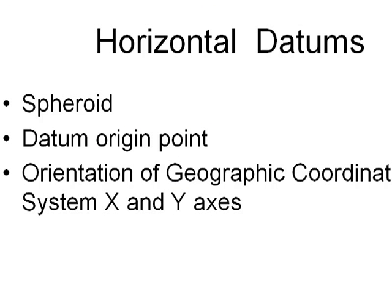We have different spheroids, and associated with those we have horizontal datums. A horizontal datum defines the assumed shape of the globe — WGS84 for GPS or NAD83 for GIS coordinates in North America — as well as the orientation of the zero point for the y-axis (the equator) and where the zero line is for the x-axis, which is the prime meridian going from the North Pole through Greenwich, England to the South Pole.